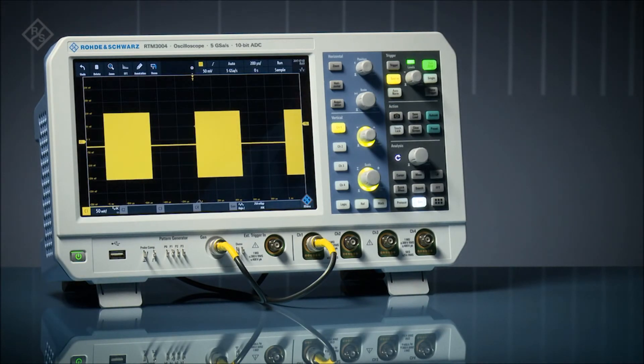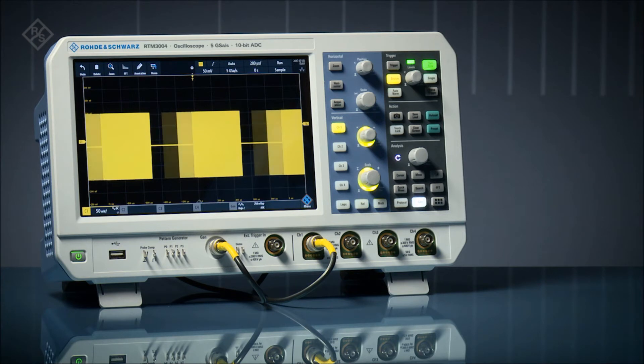Rohde & Schwarz RTM 3000 series oscilloscopes feature quick access. To get a stable trigger on this bursted signal, we use trigger holdoff.